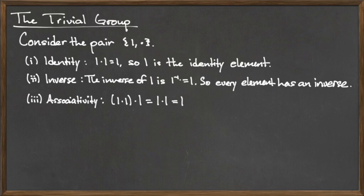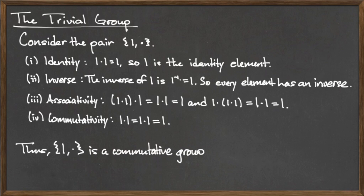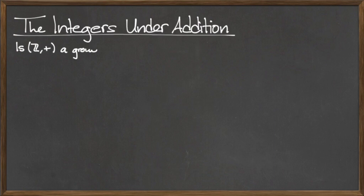The third requirement is the associativity requirement. Since 1 times any number is that number itself, and 1 is the only element in this set, the associativity requirement is satisfied. Since the set containing the element 1 under the operation of multiplication satisfies identity, inverse, and associativity, this set is a group under multiplication. In addition, this set also satisfies the commutativity property. Therefore, this set is a commutative group under multiplication, also known as an abelian group.